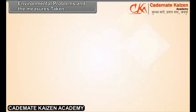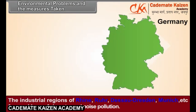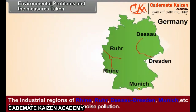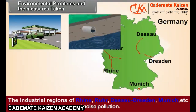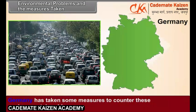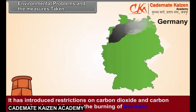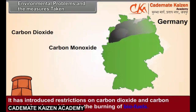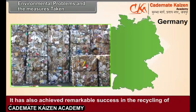Environmental Problems and Measures Taken. The industrial regions of Rhine, Ruhr, Dessau-Dresden, Munich, etc. face problems of air, water, and noise pollution. Similarly, the heavy traffic in the urban areas has led to problems of noise and air pollution. Germany has taken some measures to counter these environmental problems. It has introduced restrictions on carbon dioxide and carbon monoxide released through the burning of biofuels. It has also achieved remarkable success in the recycling of domestic garbage.